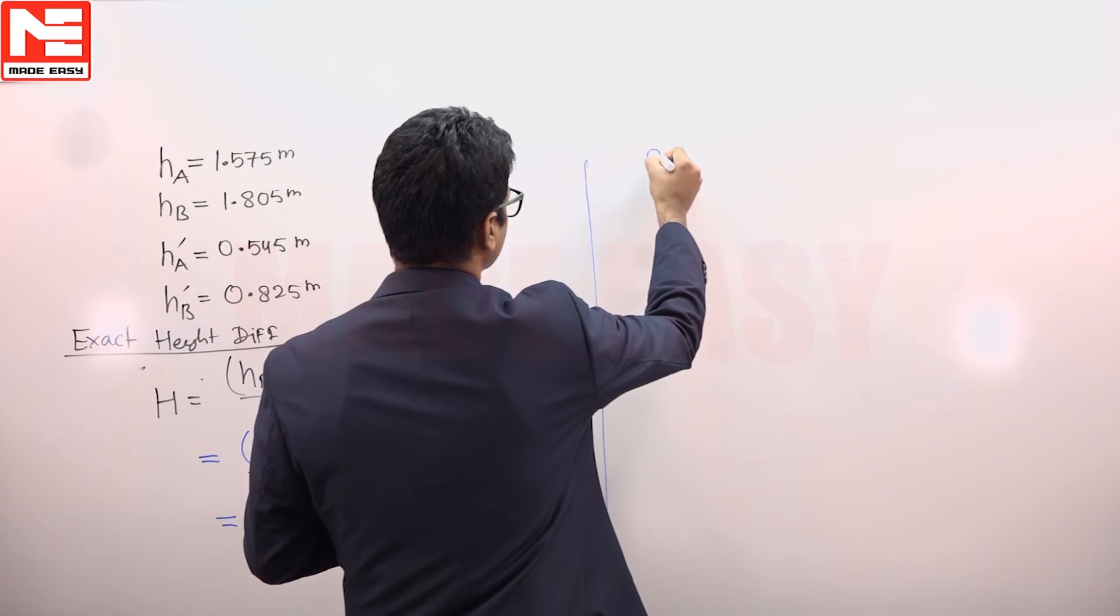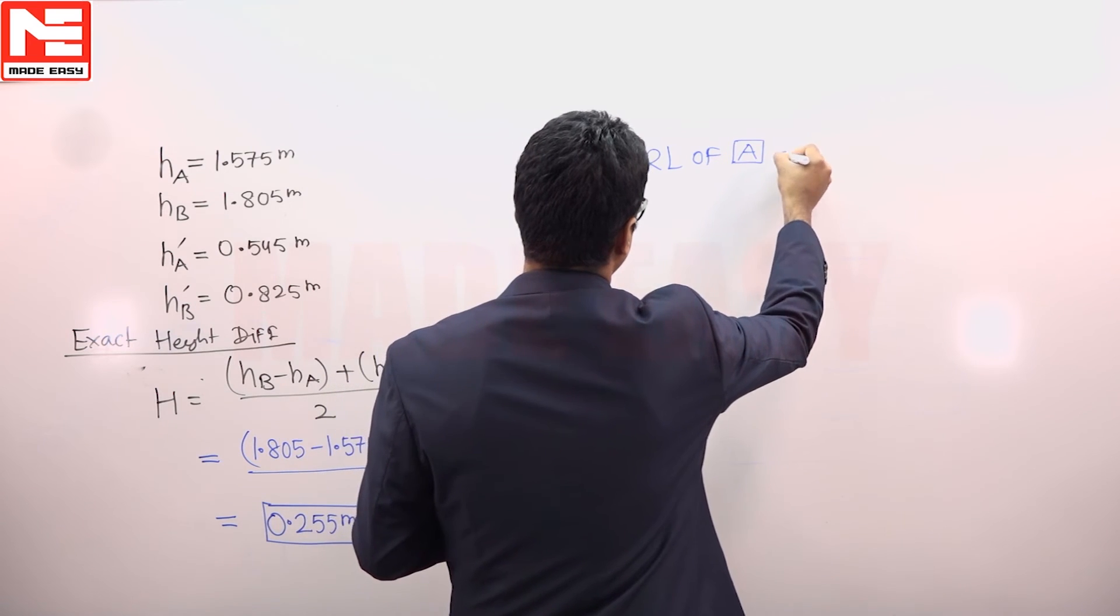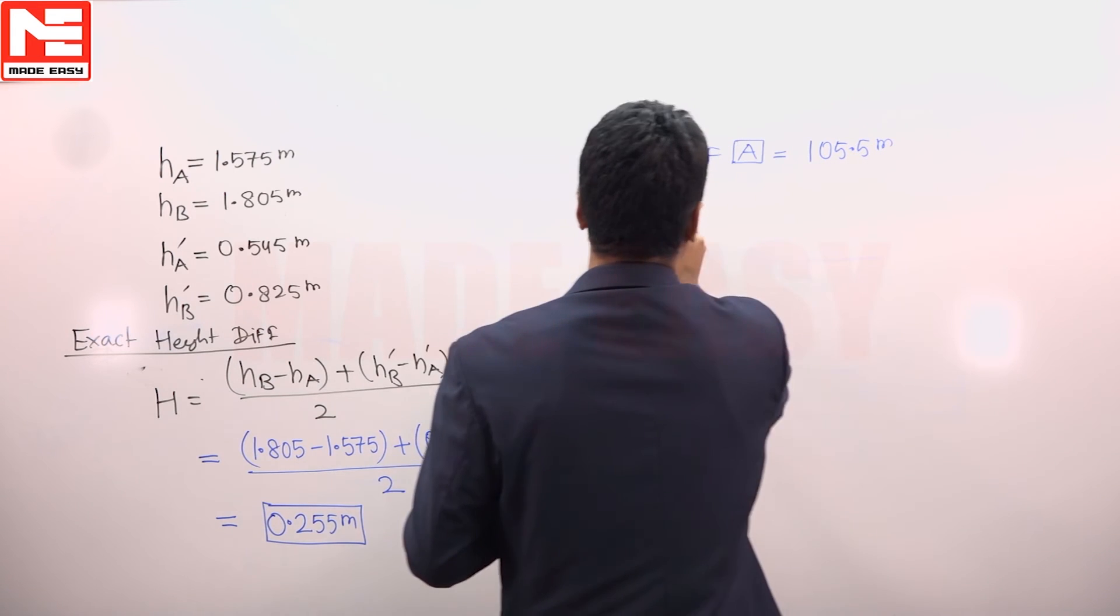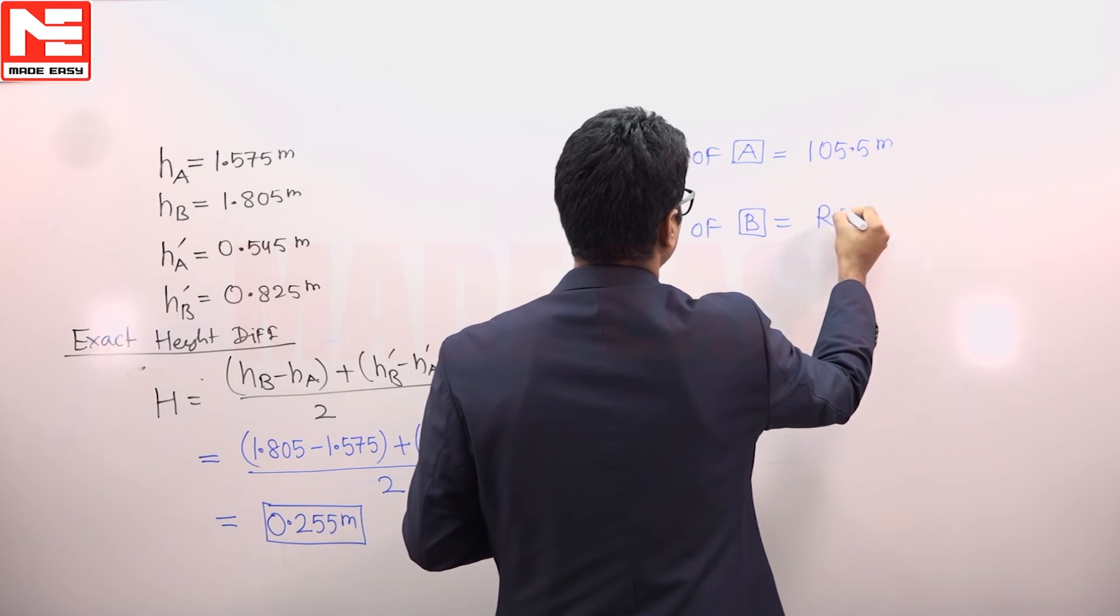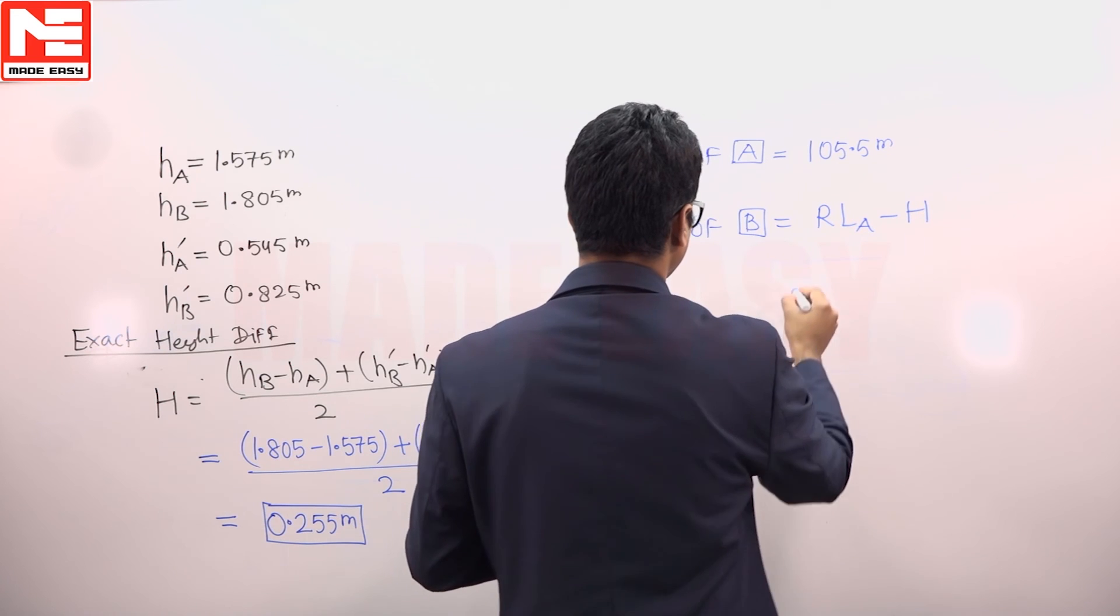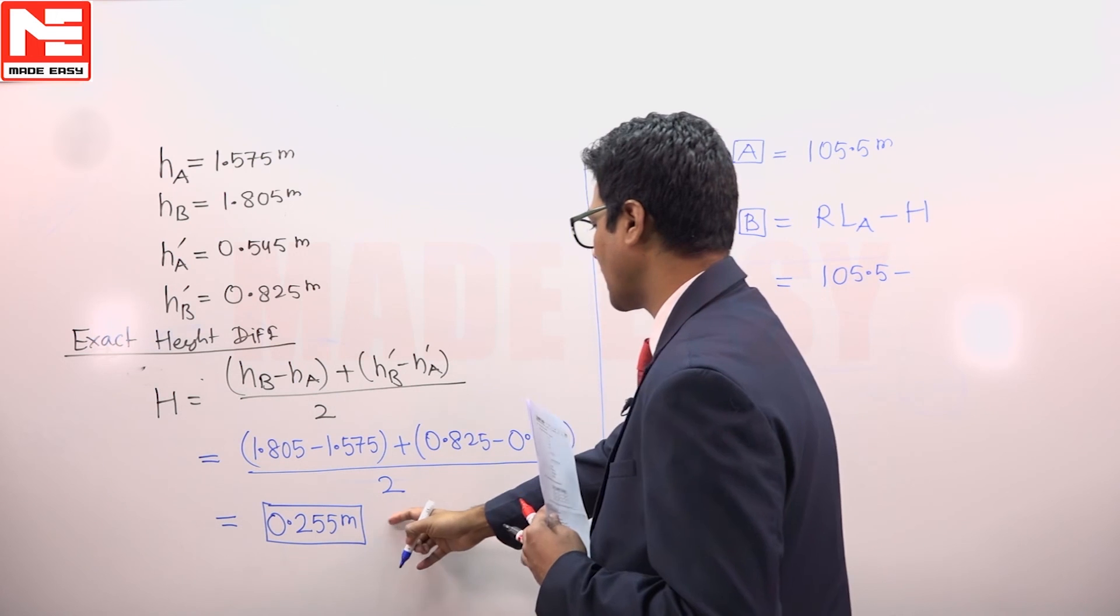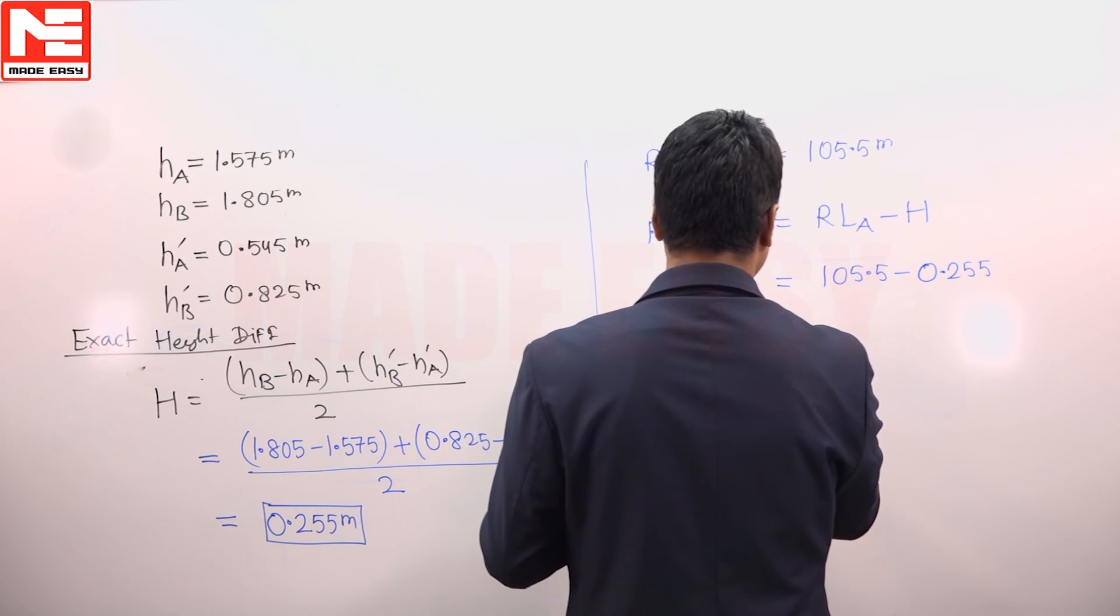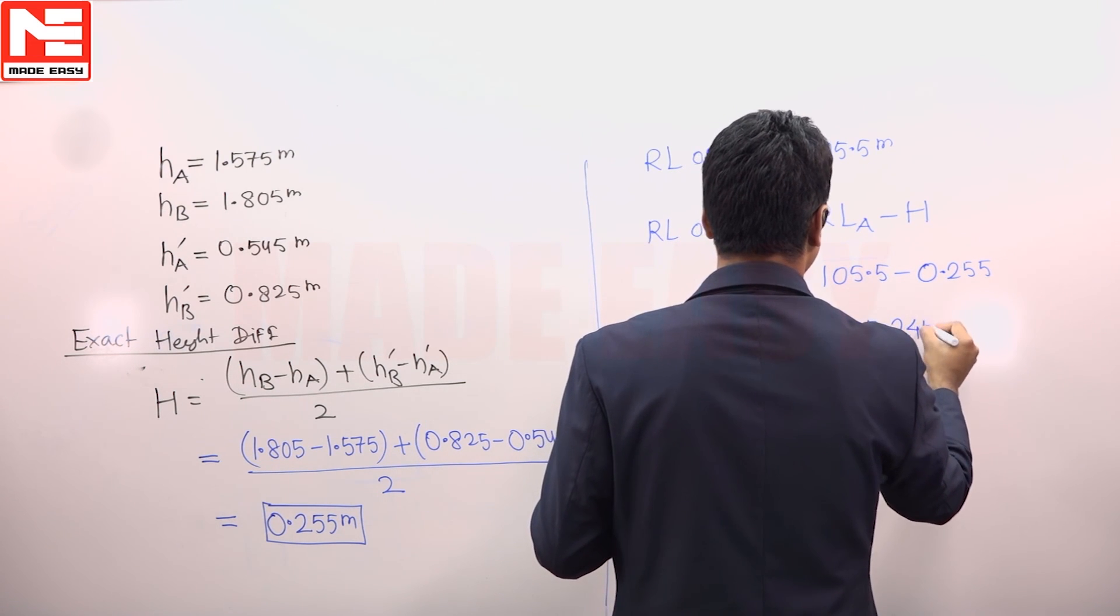Now since RL of station A is known, which is 105.5 meters, we can write RL of station B equals RL of station A minus exact height difference, which is 105.5 minus 0.255, which equals 105.245 meters.